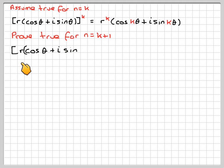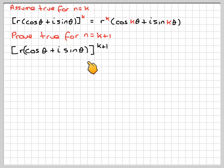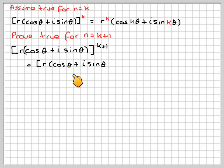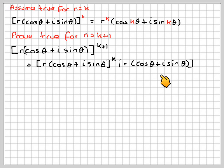We've got r(cos θ + i sin θ) to the power of k plus 1. That's going to be equal to r(cos θ + i sin θ) to the k, times another r(cos θ + i sin θ).